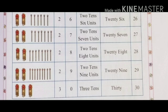Two bunches of math sticks means 20 math sticks. With 7 math sticks: 27. That is 2 tens and 7 units — 27. The spelling of 27 is T-W-E-N-T-Y (20) S-E-V-E-N (7): 27.